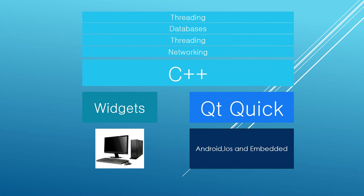One thing to make clear is that Qt is not just about graphical user interfaces — it can do much more than that. On the C++ side of Qt, you can do things like networking, threading, databases and all kinds of things. Widgets and Qt Quick are merely a technology that allows you to put together graphical user interfaces that can run on any device.